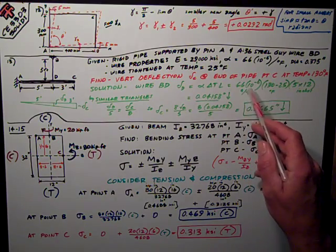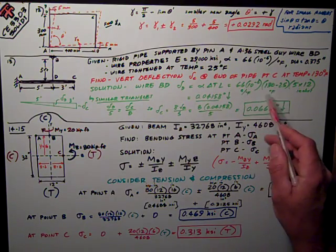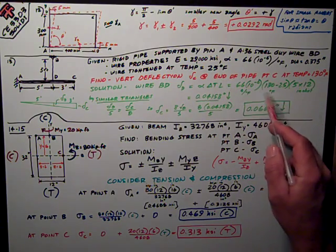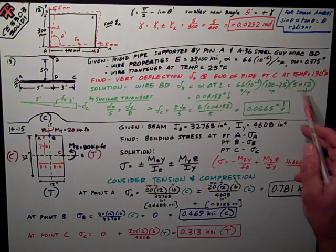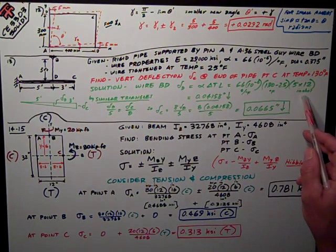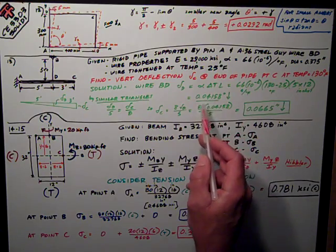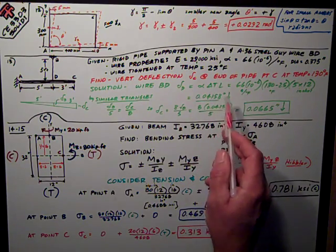Plugging in the numbers: 6.6×10⁻⁶, temperature change from 25 to 130, so 130 minus 25. The length I put in inches, 5 times 12, works out to be 0.04158 inches down. That wire gets longer when it gets warmer, so it deflects down.